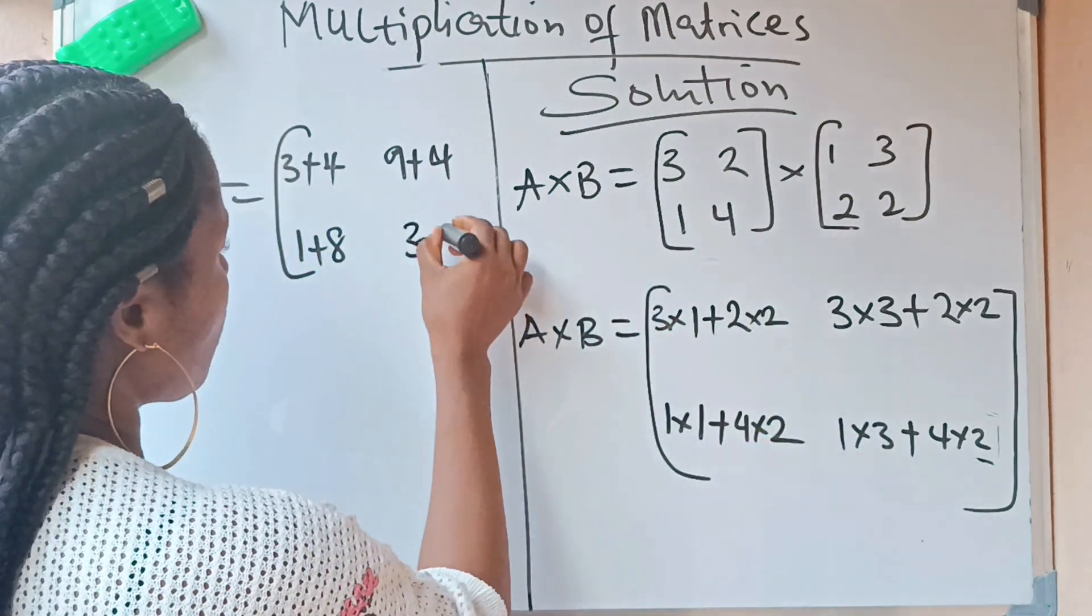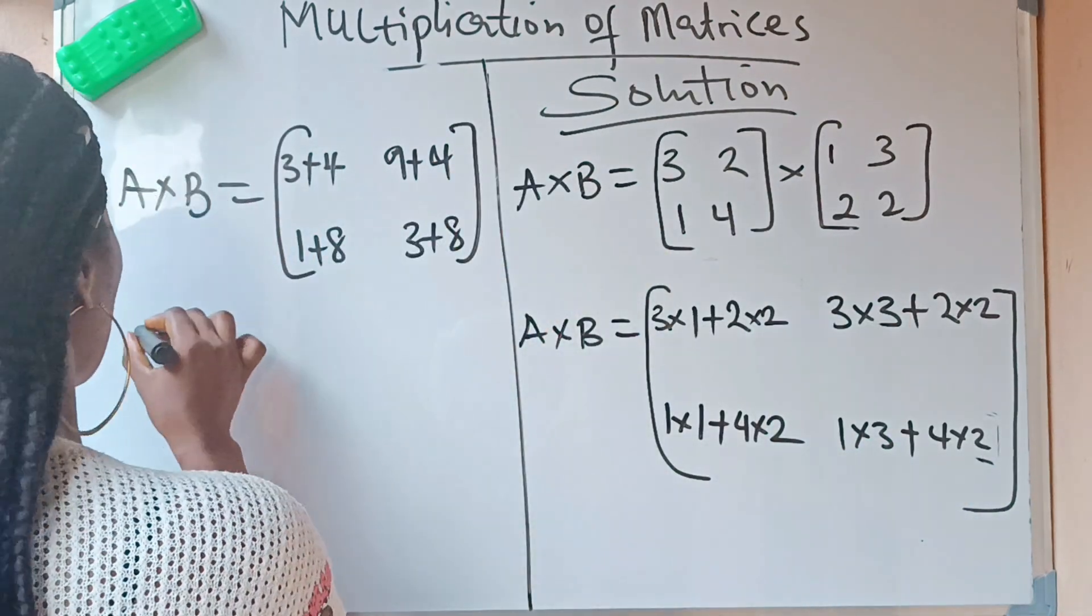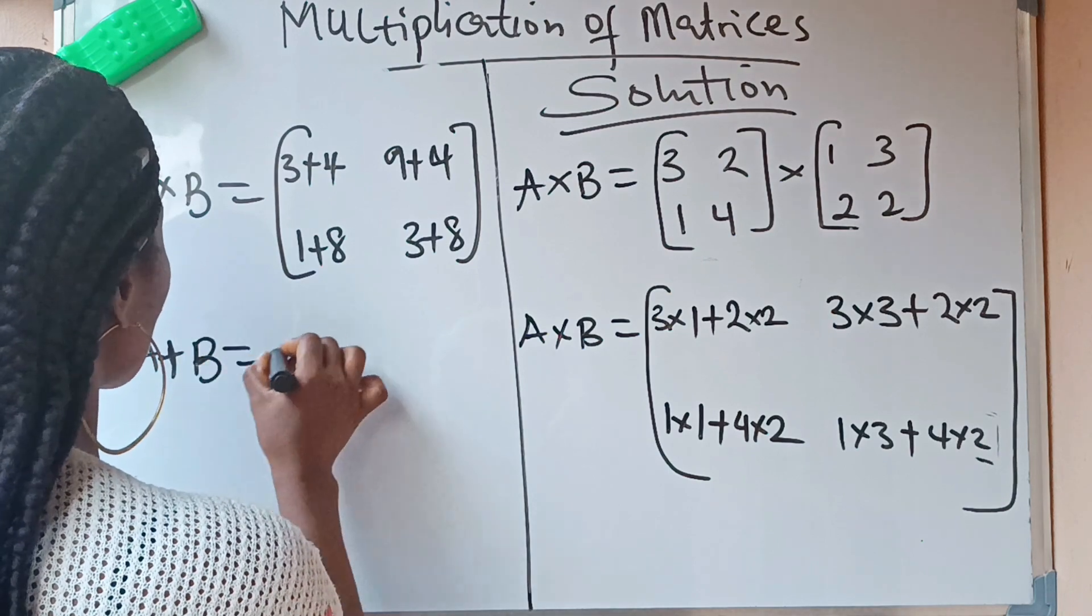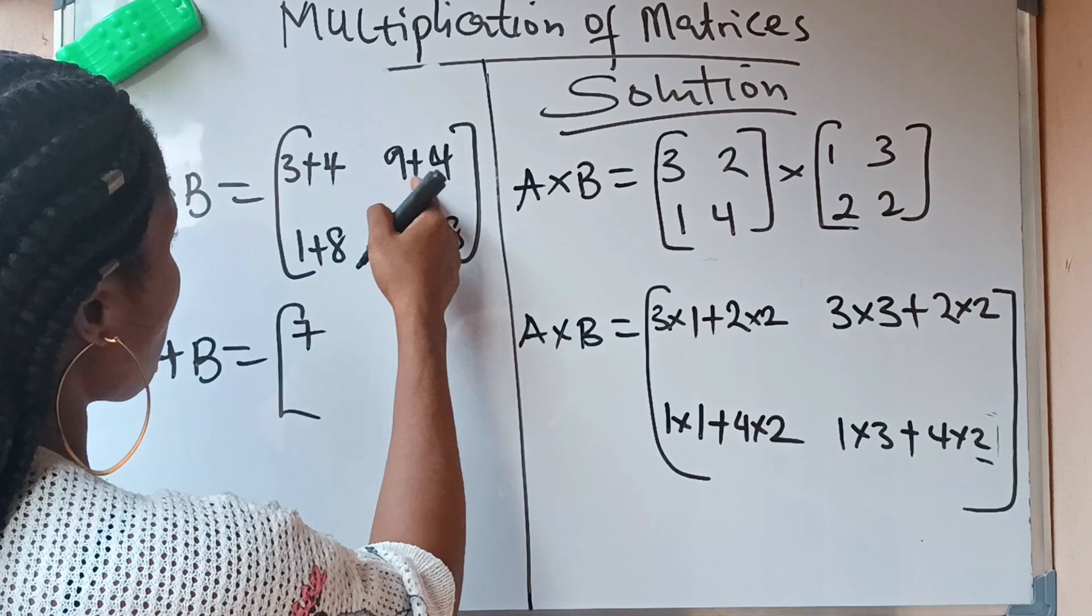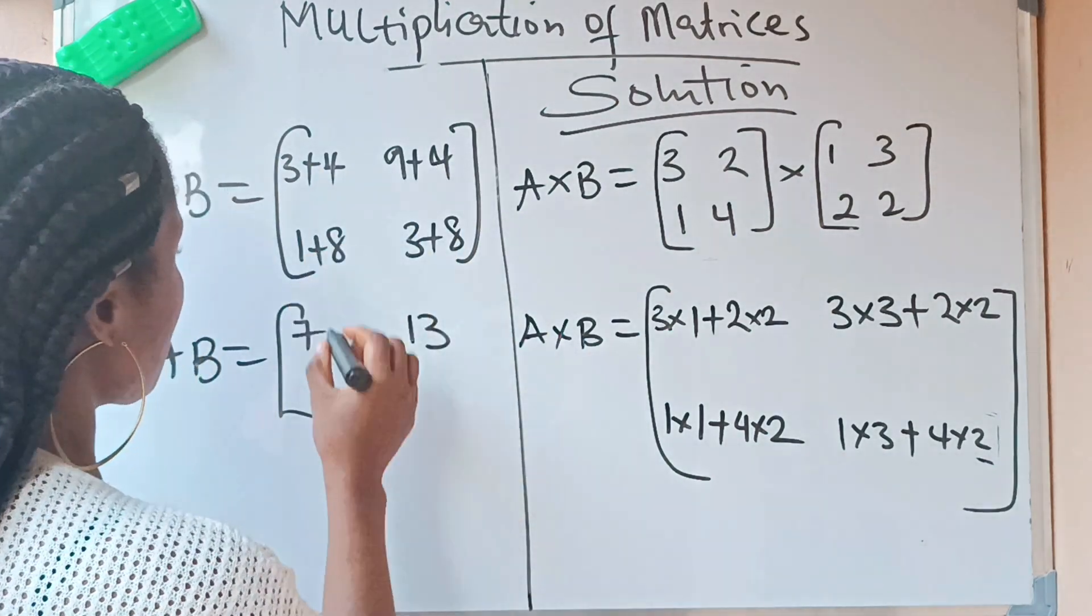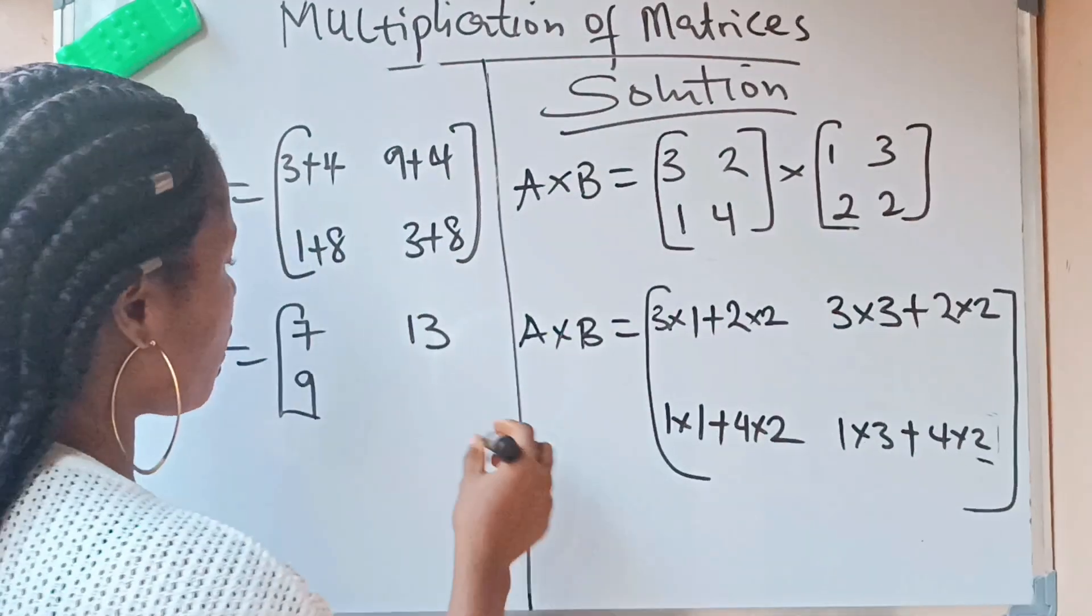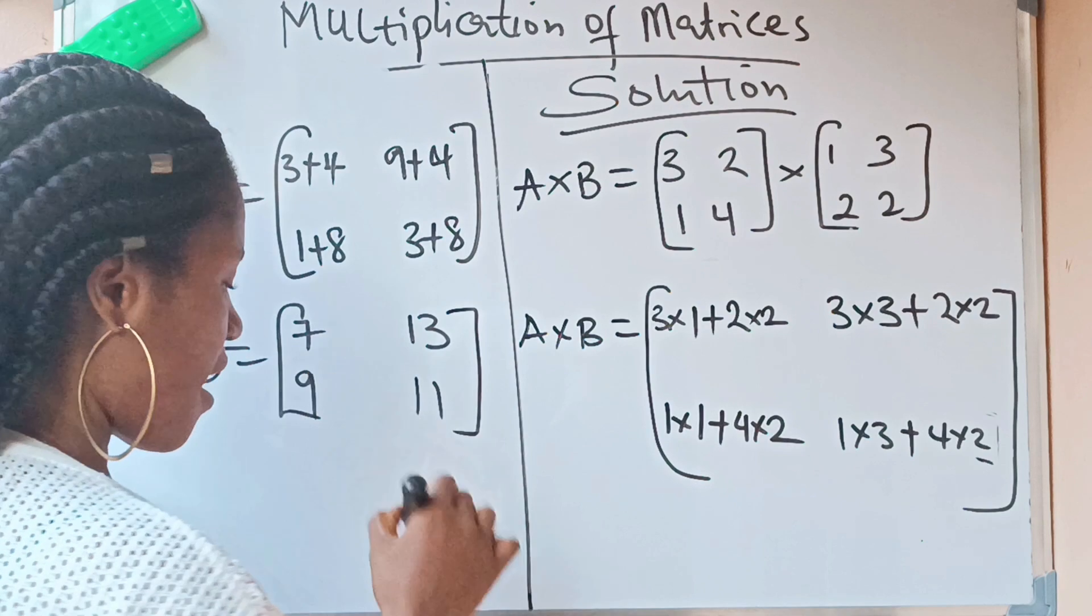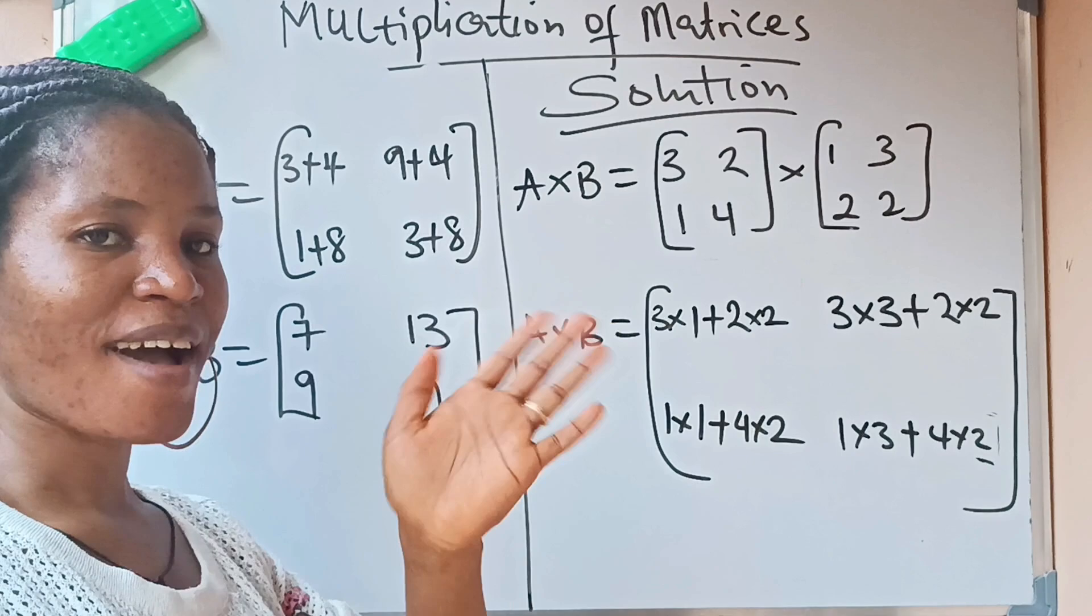1×3 is 3, plus 4×2 is 8. So we're now going to solve this: 3+4 is 7, 9+4 is 13, 1+8 is 9, and 3+8 gives us 11. That is your final answer. Have a lovely day and bye.